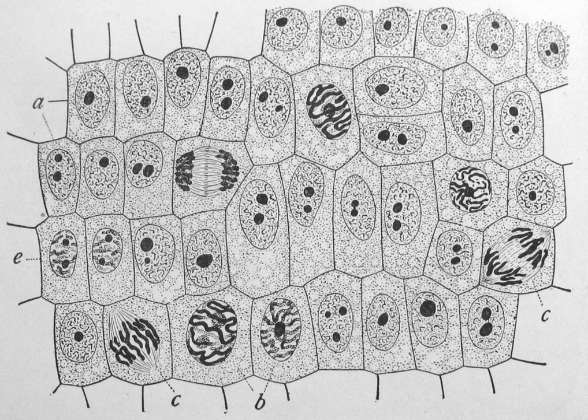Prokaryotes include bacteria and archaea, two of the three domains of life. Prokaryotic cells were the first form of life on Earth, characterized by having vital biological processes including cell signaling. They are simpler and smaller than eukaryotic cells, and lack membrane-bound organelles such as a nucleus. The DNA of a prokaryotic cell consists of a single chromosome that is in direct contact with the cytoplasm. The nuclear region in the cytoplasm is called the nucleoid.